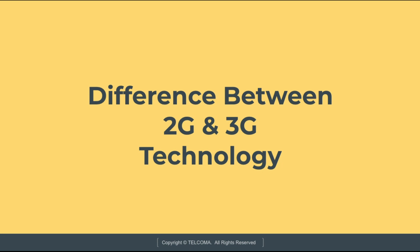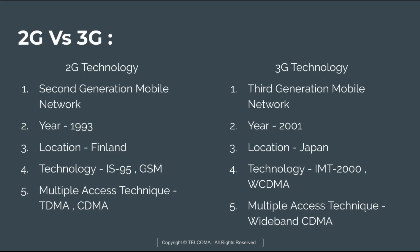The 2G technology is known as second generation mobile network and 3G technology is known as the third generation mobile network. The 2G technology was introduced in 1993 whereas 3G technology was introduced in 2001. 2G technology was first launched in Finland and 3G technology was first launched in Japan.